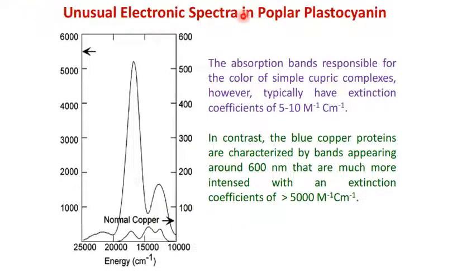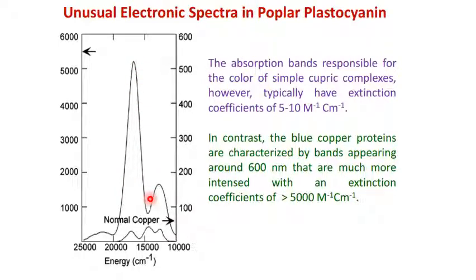Regarding unusual electronic structure in plastocyanin: the absorption band responsible for the color of simple cupric complexes typically has a molar extinction coefficient of only 5–10 M⁻¹cm⁻¹. In contrast, blue copper proteins are characterized by a band appearing around 600 nm that is much more intense, with a molar extinction coefficient greater than 5000 M⁻¹cm⁻¹. The blue color of blue copper protein is observed when copper is in the plus 2 oxidized state. When it is reduced to copper 1, it becomes colorless, because Cu1+ has a d¹⁰ electronic configuration. It is this electronic transition in the Cu2+ state that gives rise to the characteristic color.